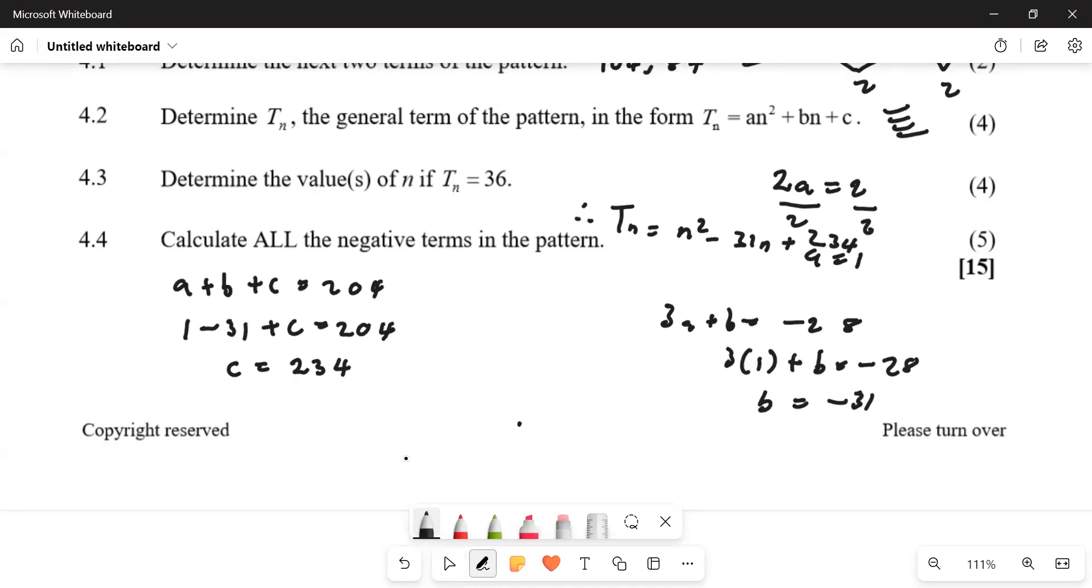Determine the values of n if Tn equals to 36. So here we want the values of n, the position, right? So when Tn is substituted, we substitute 36, right?